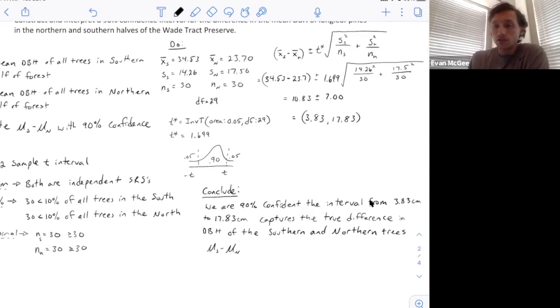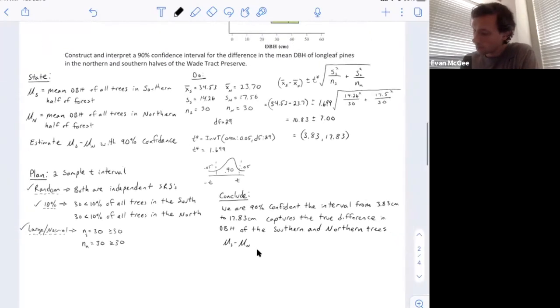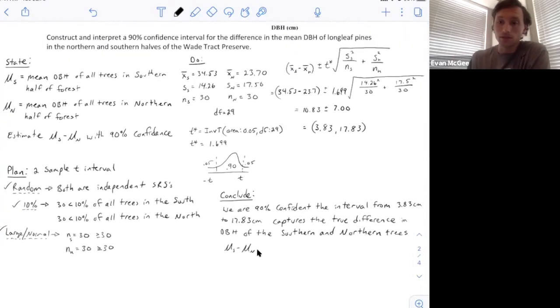We're 90% confident that the interval from 3.83 to 17.83 centimeters captures the true difference in the DBH of the southern and northern trees—the population means. One thing to note about this interval is that all the values are positive and zero does not fall in the interval. This gives us reason to believe that the trees in the south are bigger than the trees in the north.